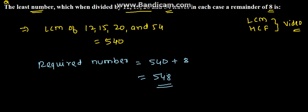When divided by 12, 15, 20, and 54, it leaves a remainder of 8, which is the solution for the given problem. Thank you.